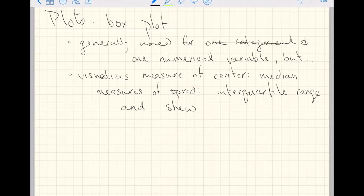So let's just scratch out one categorical and just say that for now a box plot is used for one numerical variable. Next week we'll extend this video to one categorical and one numerical variable, but for now, just this video will be about one numerical variable.